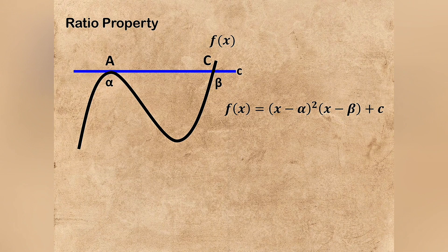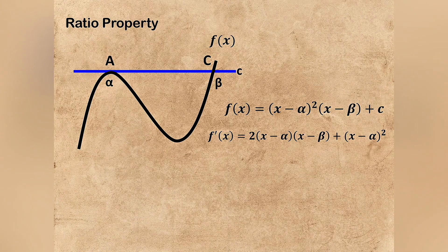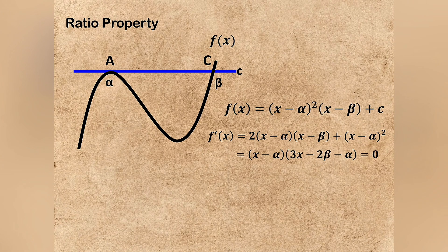Then we can talk about the derivative of f(x) as 2(x-α)(x-β)+(x-α)². If you factor (x-α) out, then this is the same as (x-α)(3x-2β-α).